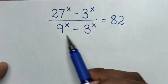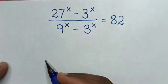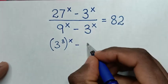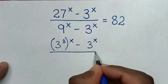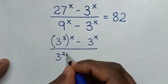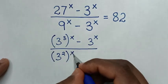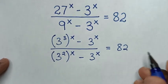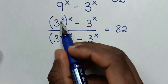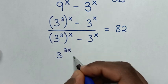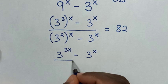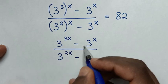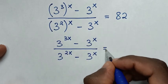The exponents on the left side can be written in the same base of 3. So 27^x becomes (3^3)^x, minus 3^x, over 9^x which becomes (3^2)^x, minus 3^x, equals 82. Our equation becomes 3^(3x) minus 3^x over 3^(2x) minus 3^x equals 82.